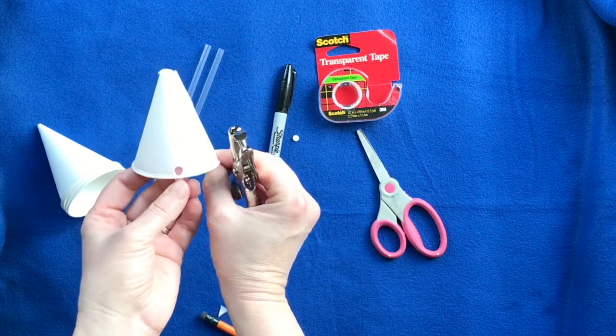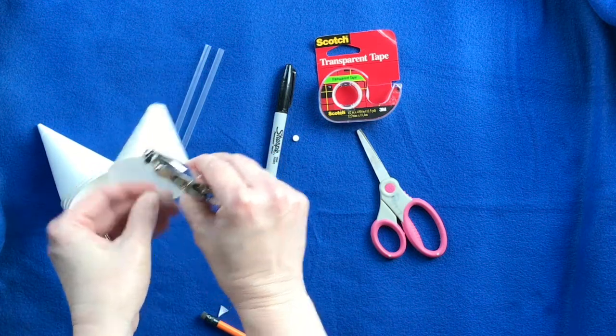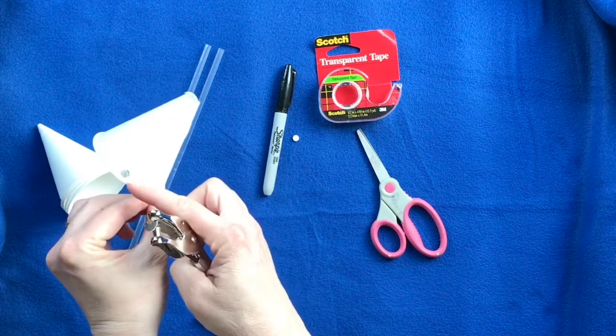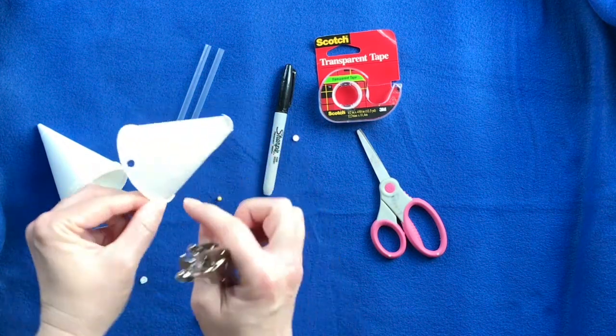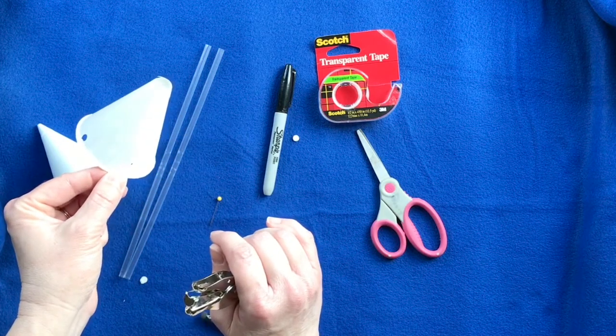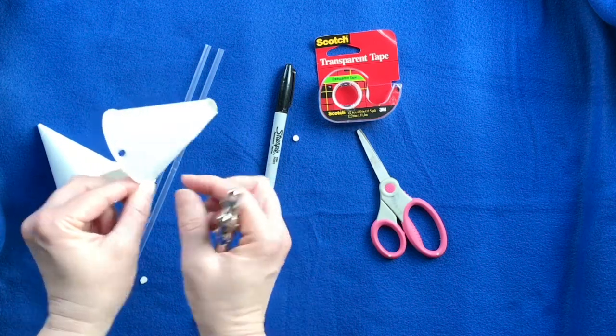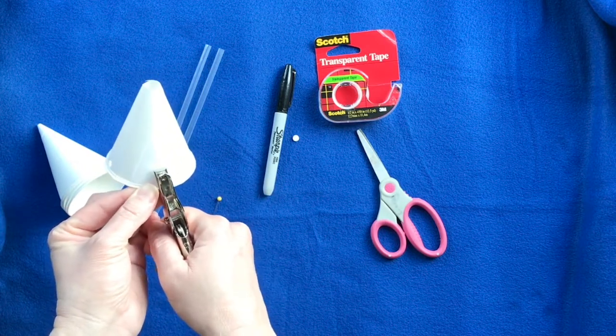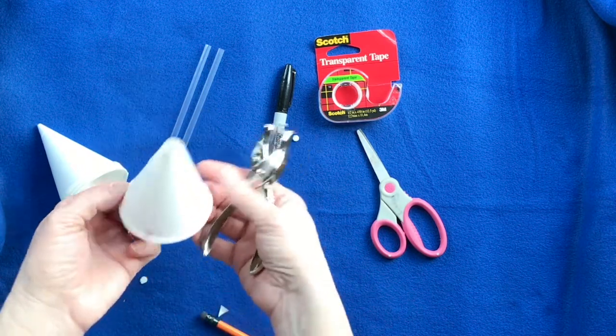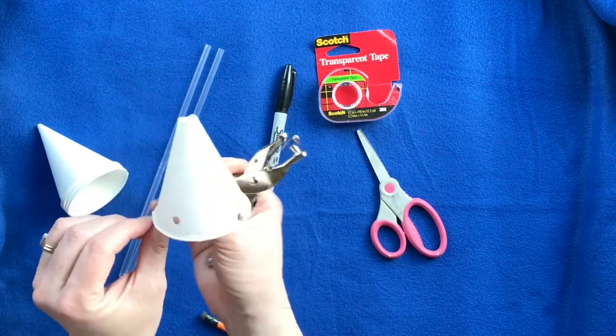With the other two holes, you want them to be about a half centimeter lower than these holes had been. So a pinky width is about a centimeter, so about half of that below those first holes. And again, I'm going to mark them ahead of time to make sure that they were right across from each other.